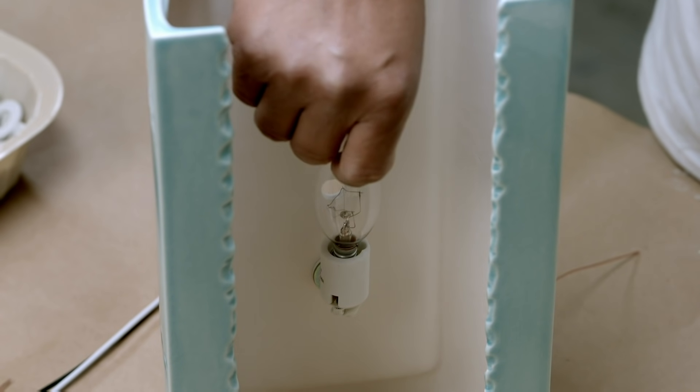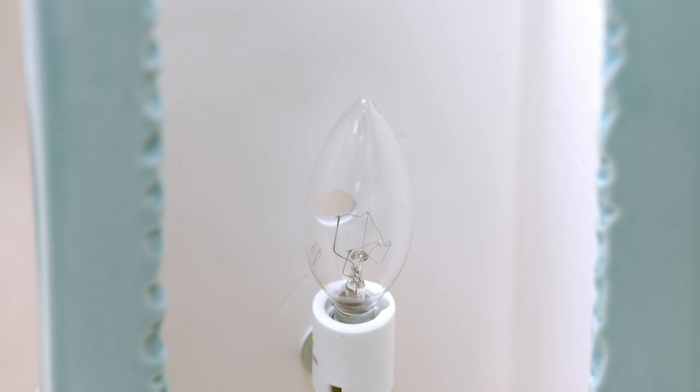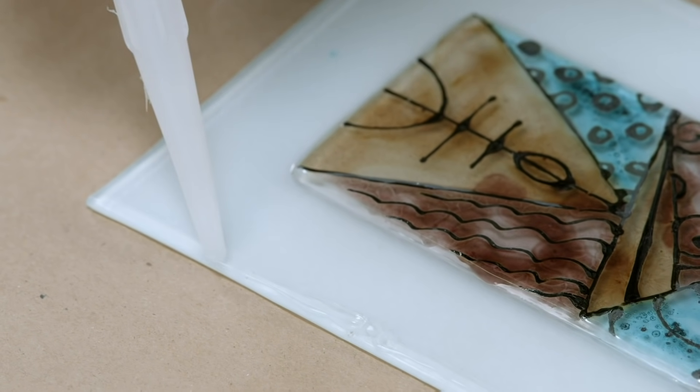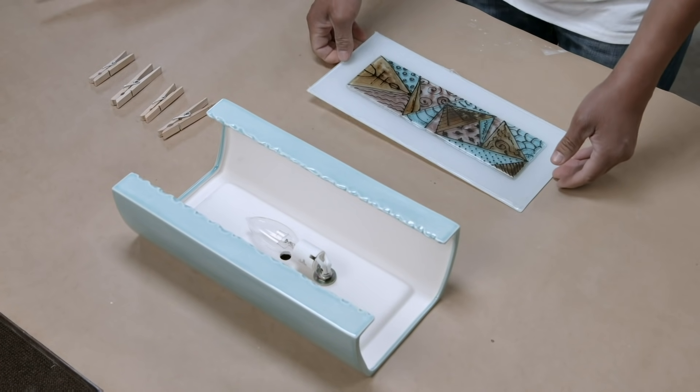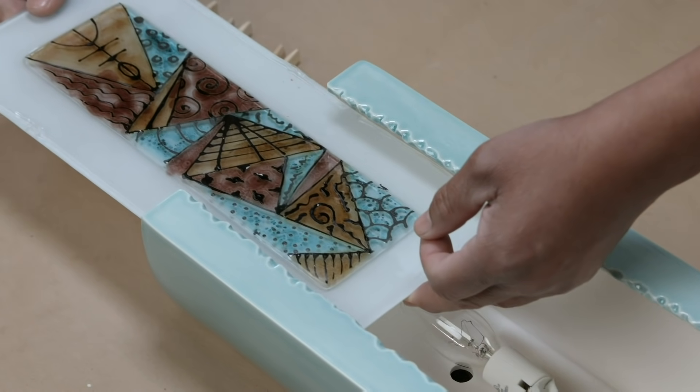After a bulb has been screwed into the socket, the casing is ready for the art glass pane. First, adhesive is gunned down either side of the pane. The pane is then placed into the ceramic frame of the sconce window and set into position.